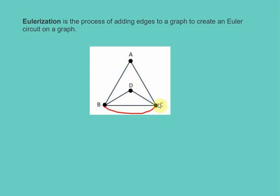Adding that edge gives vertex C a degree of four, and it also gives vertex B a degree of four. So now all the vertices have an even degree, which means we would be able to create an Euler circuit on this graph.